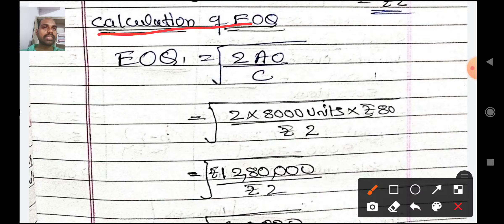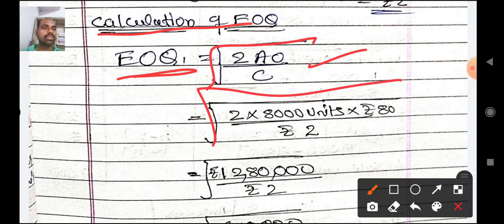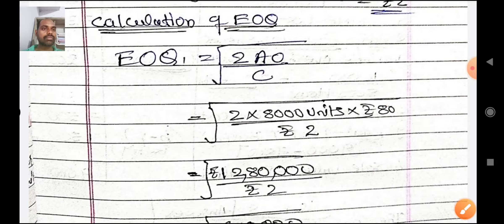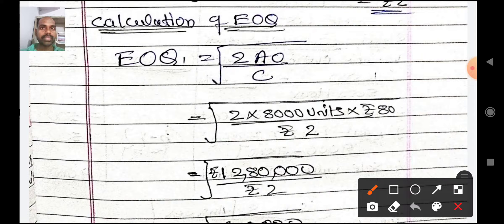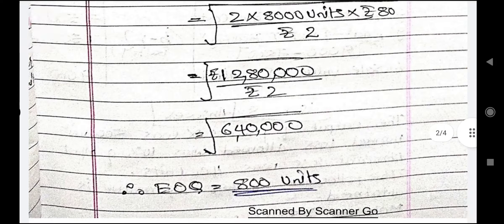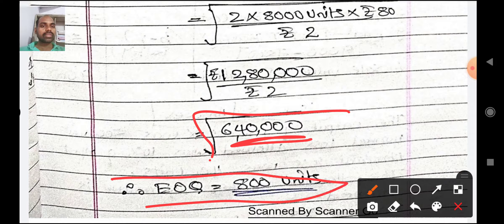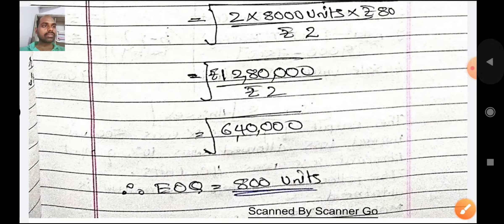How will you calculate EOQ? EOQ equals under root of 2AO divided by C. So it is under root of 2 into 8000 into 80 divided by 2 rupees. That gives under root of 12,80,000 divided by 2, which is under root of 6,40,000. Therefore EOQ equals 800 units.